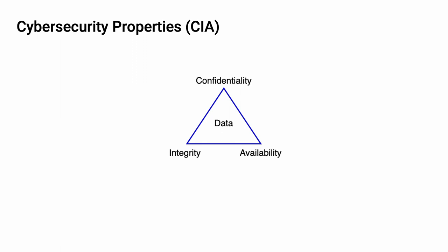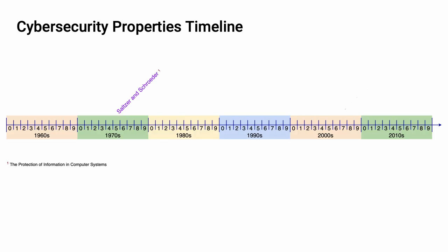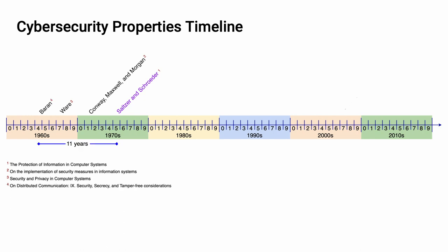Let's take a quick look at a timeline. When people talk about the CIA, they point to a document written by Salter and Schroeder in 1975 entitled 'The Protection of Information in Computer Systems.' This is by no means the first time anyone had spoken about confidentiality, integrity, and availability. We can go back to documents by Conway, Maxwell, and Morgan in 1971, and further to a document written by Ware in 1967, and finally to 'On Distributed Communication, Security, Secrecy, and Tamper-Free Considerations' by Byron in 1964 — a full 11 years before the Salter and Schroeder paper.